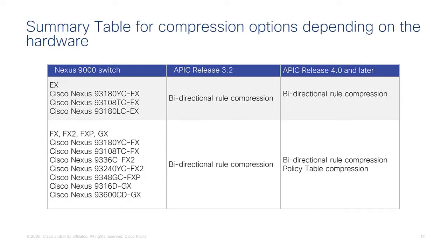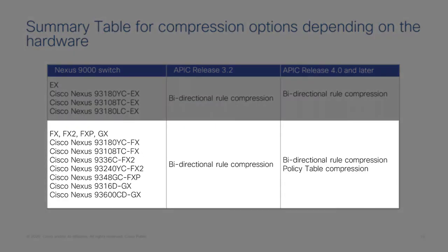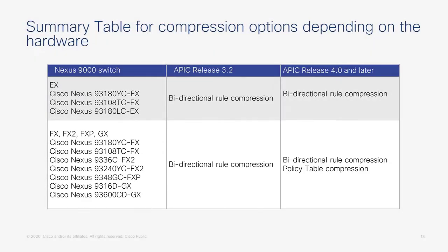Here's a summary table of which hardware supports which options. This shows the list of leaves that can do bidirectional route compression, whether it's ACI 3.2 or ACI 4.0 and later. FX leaves can do bidirectional route compression from 3.2, and from 4.0 they can also do the policy table compression we discussed.